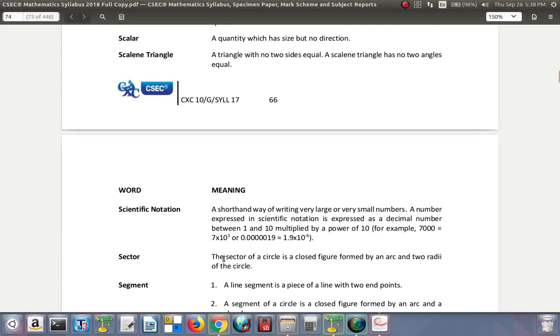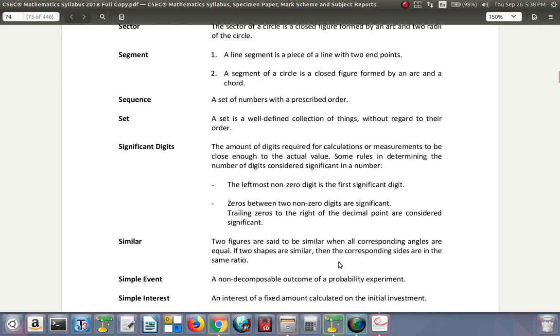Sector. The sector of a circle is a closed figure formed by an arc and two radii of the circle. Segment. A line segment is a piece of a line with two endpoints. The second definition here is a segment of a circle is a closed figure formed by an arc and a chord. We'll look at those things at a later date in more detail.